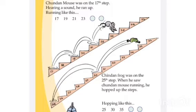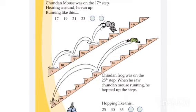Chintan Mouse was on the 17th step. Hearing a sound, he ran up, jumping like this: 17, then he jumped to 19, from there to 21, then to 23, then to 25, and then he ran to 27. By skipping one step each time, he is jumping up, up, up!